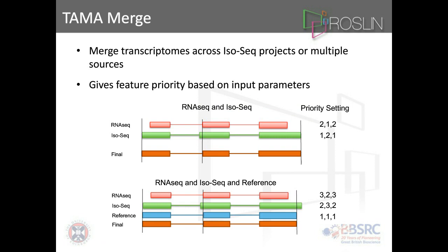TAMA merge was designed to merge transcriptomes across IsoSeq projects, and also allows merging with other sources while giving priority to features each source is better at. You would give IsoSeq transcription start and end sites priority of one since those are expected to be really good, give splice junction calls from RNA-seq high priority for junctions, and give a reference annotation the best priority overall. With Sequel 2 and the number of reads you get, you often have to split your SAM files to do collapsing, and TAMA merge can re-resolve that. It gives detailed reports about what was merged.